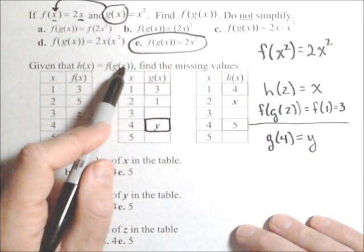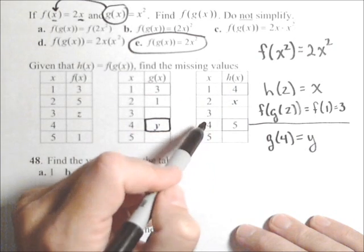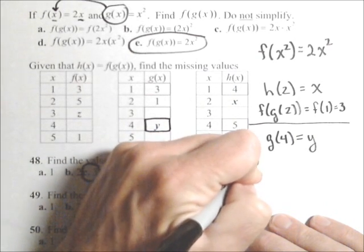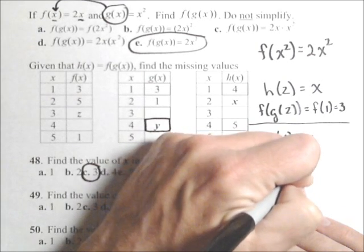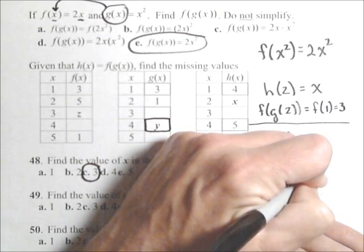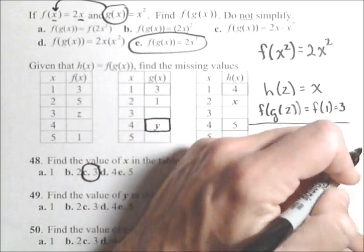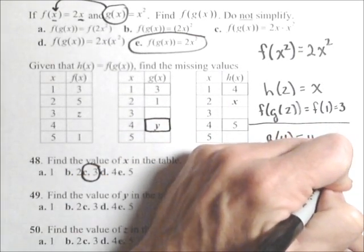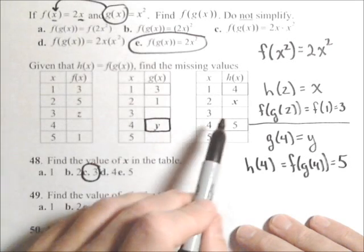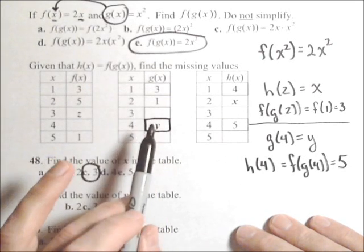So that means we're interested in what h of 4 is equal to. Because h of 4 is f of g of 4, and that is equal to 5. That's just following our composition. That's all we're doing here.